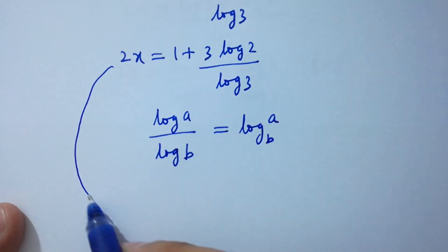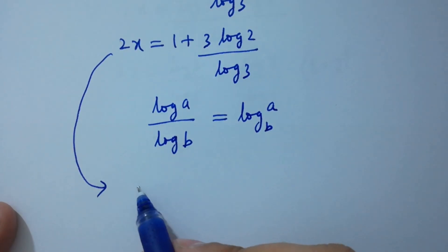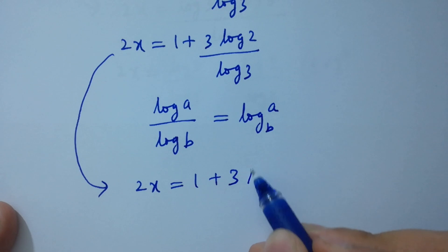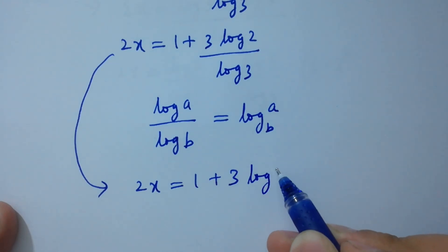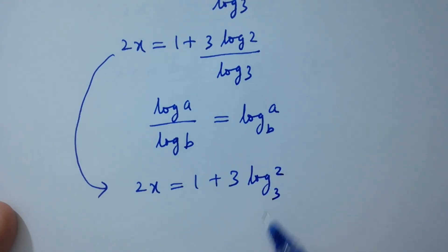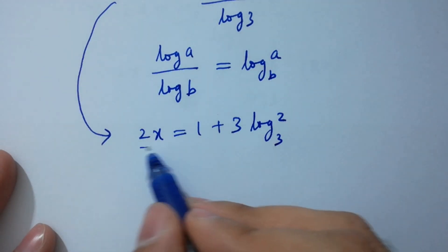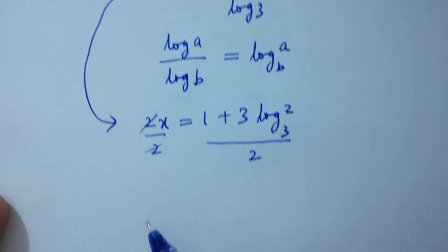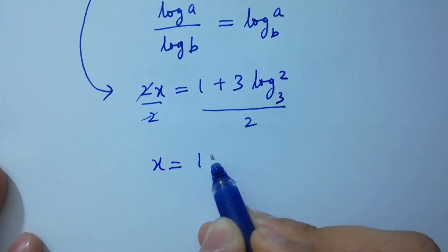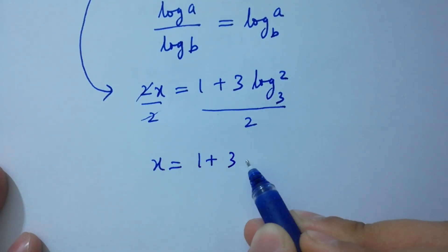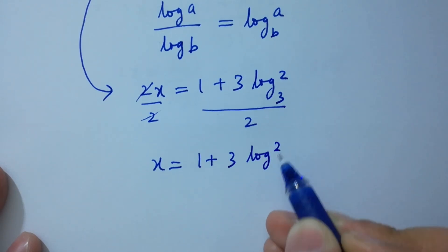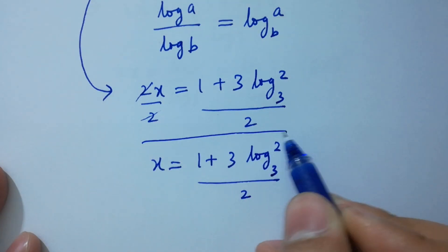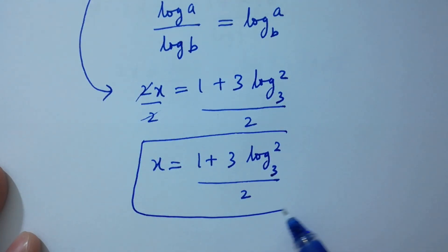Therefore 2x equals 1 plus 3 log 2 to the base 3, giving x equals log 2 to the base 3 over 2 — and that is the value of x.